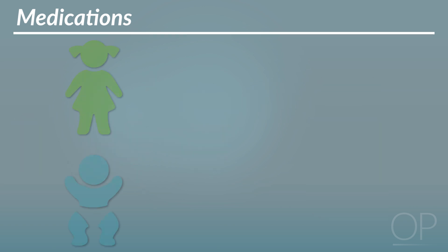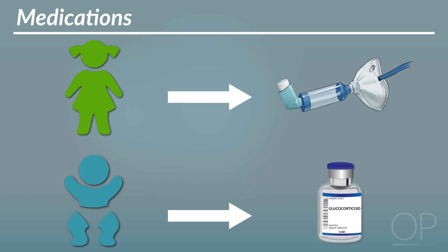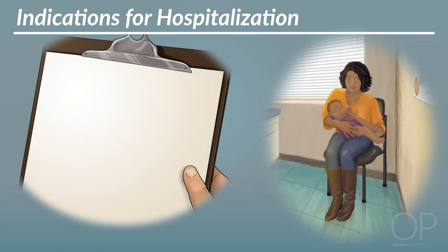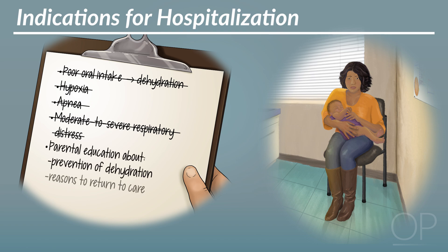However, future studies may allow clinicians to prospectively identify children who are more likely to benefit from one or more of these interventions based on history, exam, and viral and/or bacterial testing. Indications for hospitalization include poor oral intake leading to dehydration, hypoxia, apnea, or moderate to severe respiratory distress. Children without these features can be managed as outpatients, with parental education on avoiding dehydration and reasons to return to care.